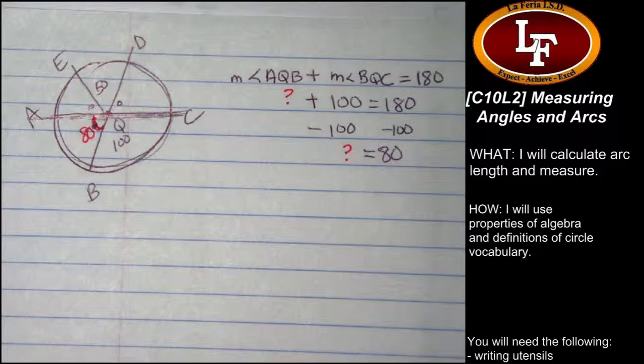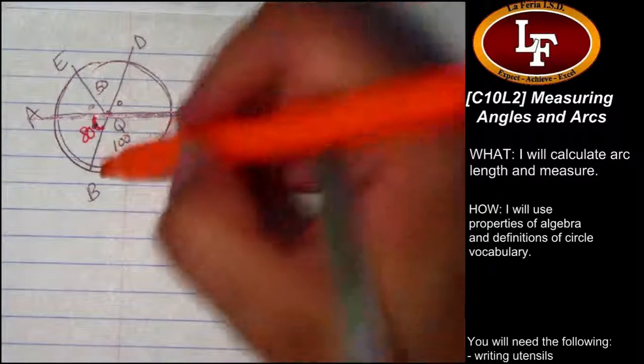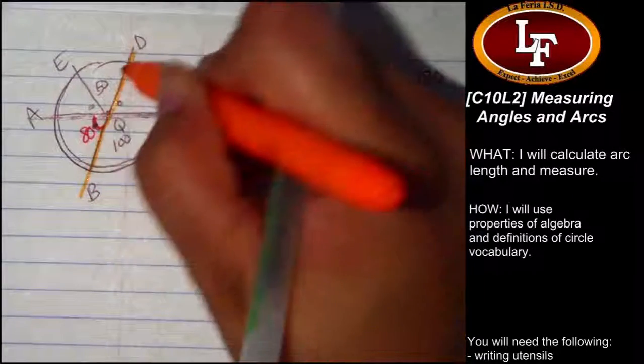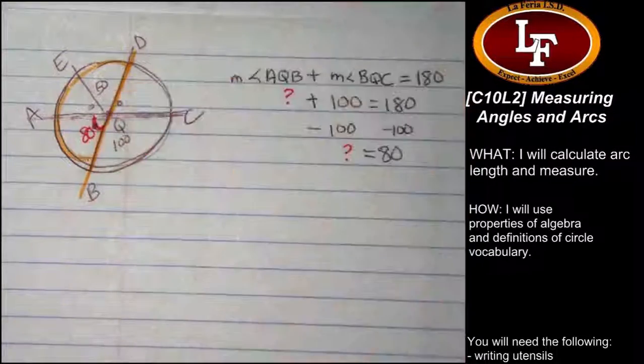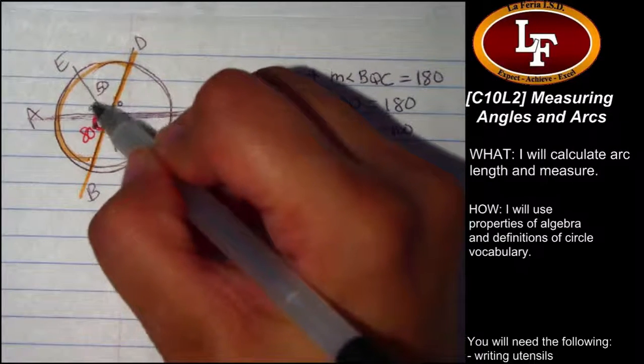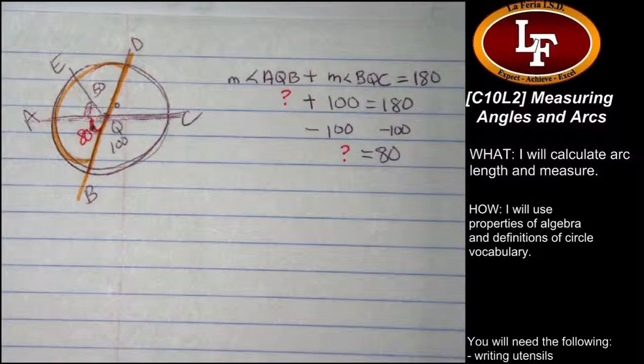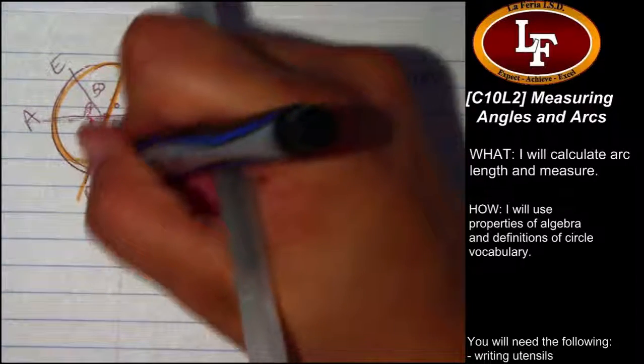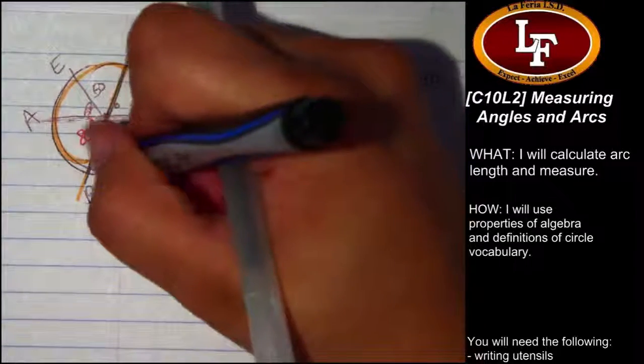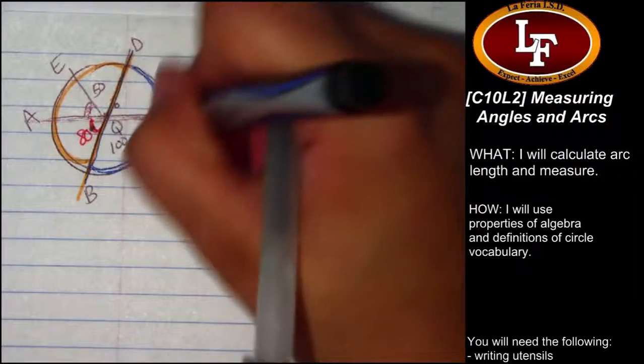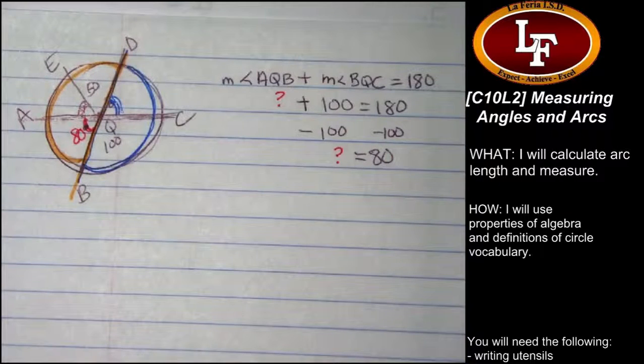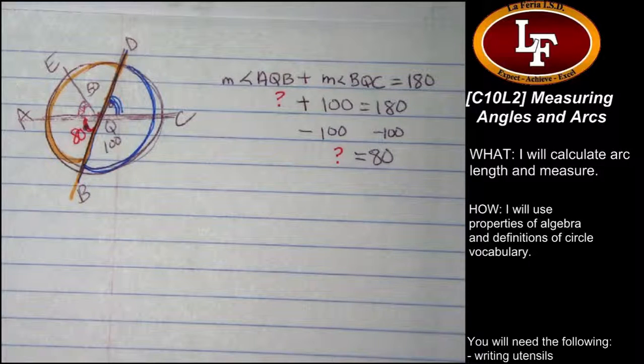Now you can look at this diameter and this resulting semicircle to do the same thing to find the measure of this angle. Use that same technique. You can also notice that we've got some vertical angles happening there that could help you out.